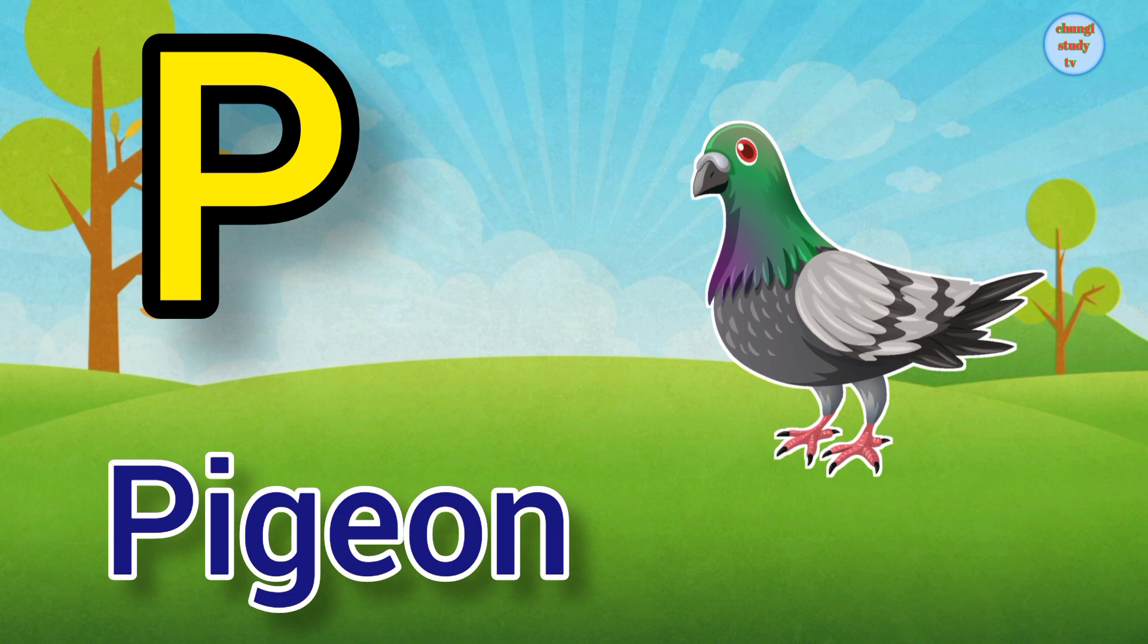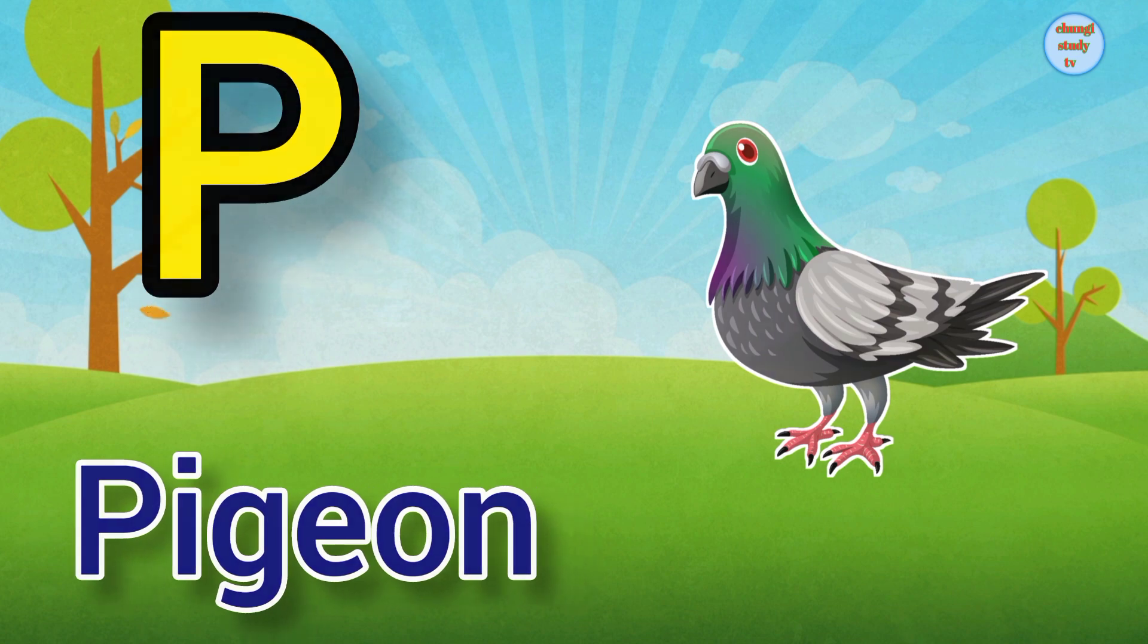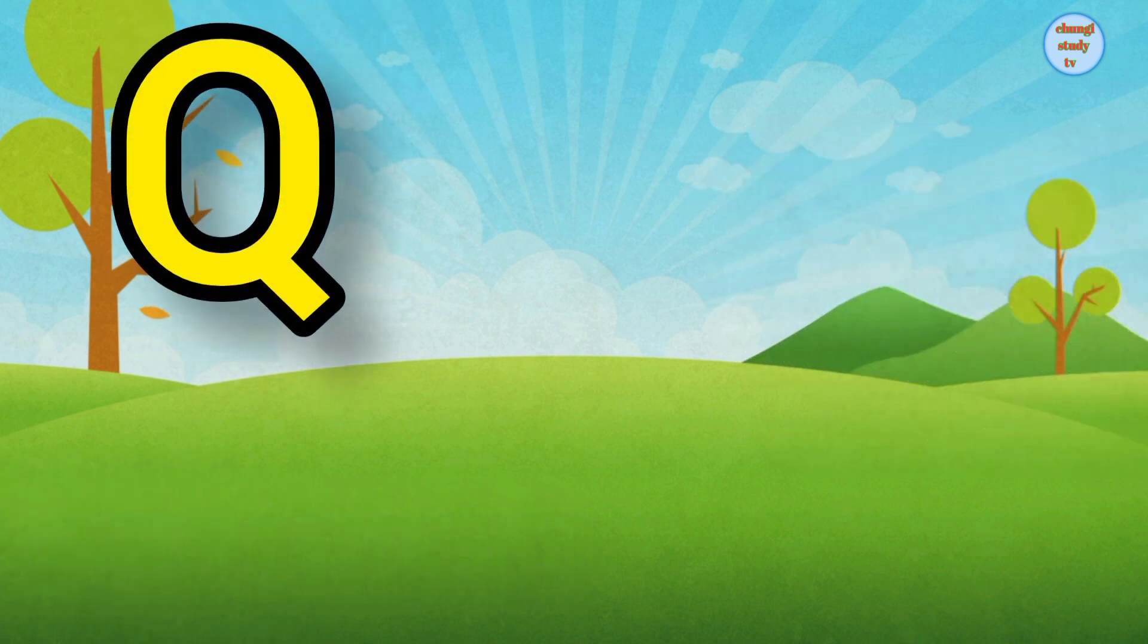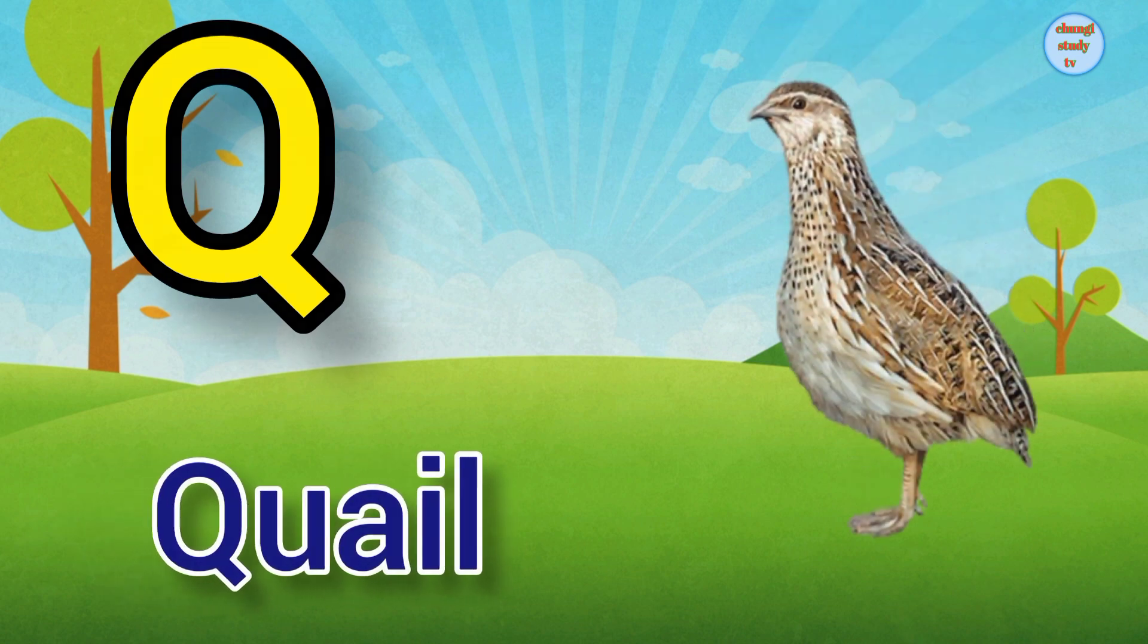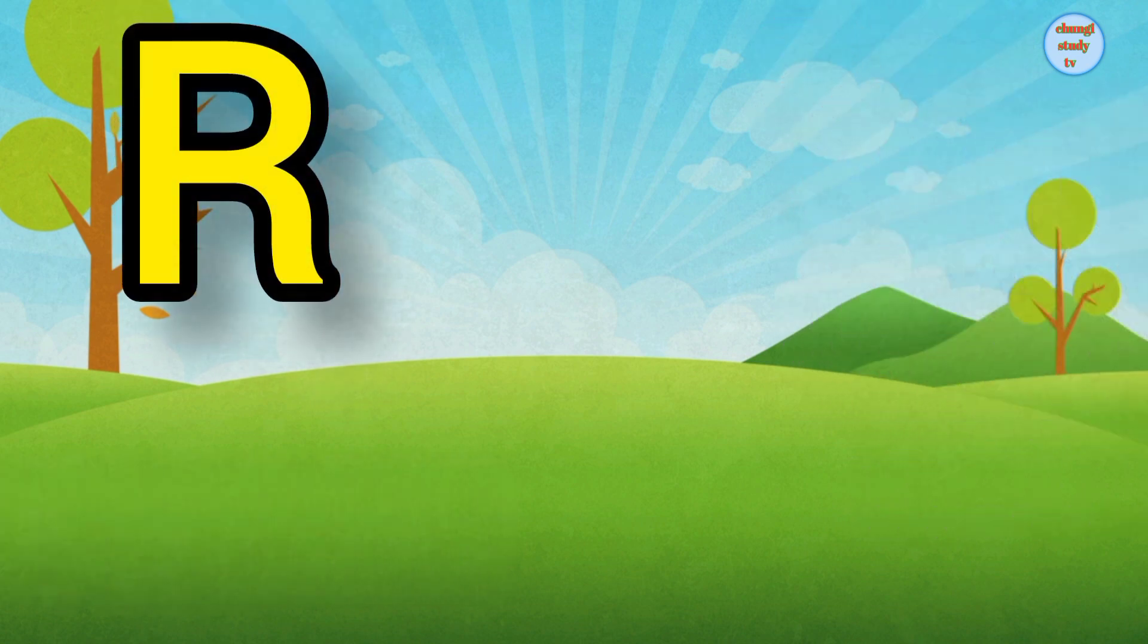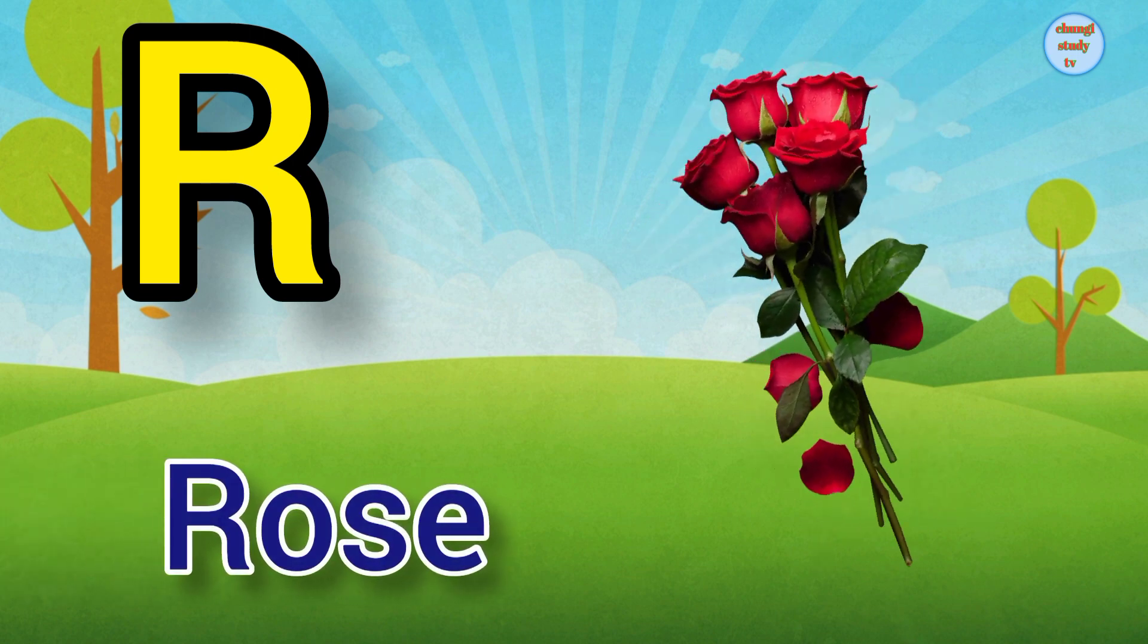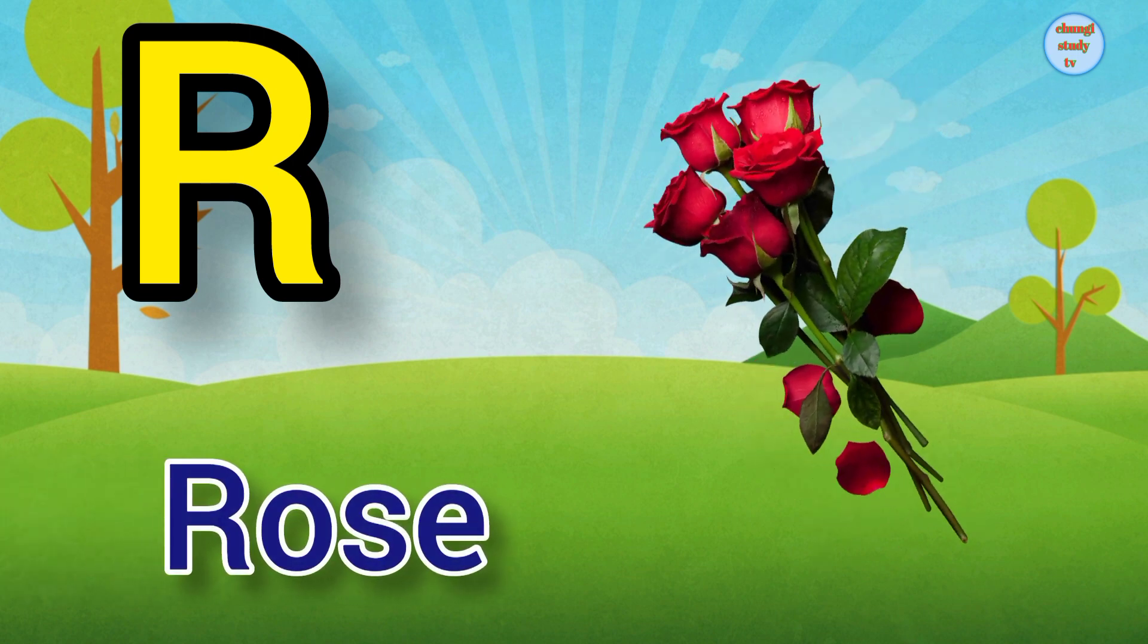P. P for Pizan, Pizan means kabutar. Q. Q for Kuala, Kuala means butter. R. R for Rose, Rose means gulab.